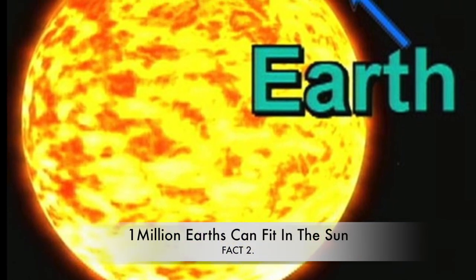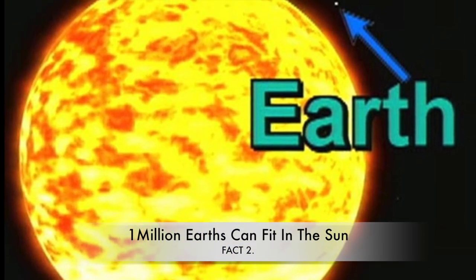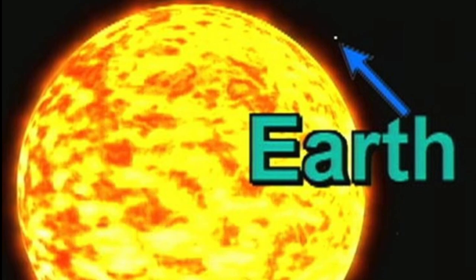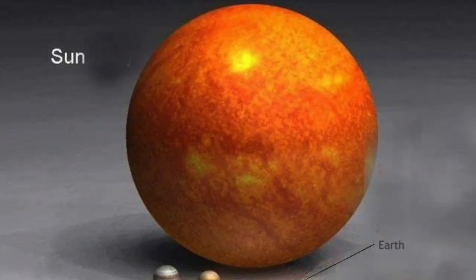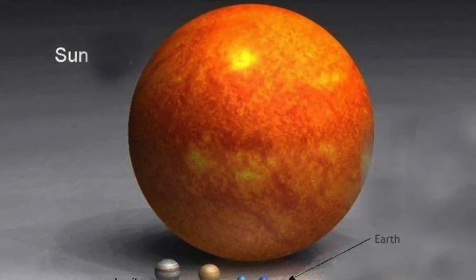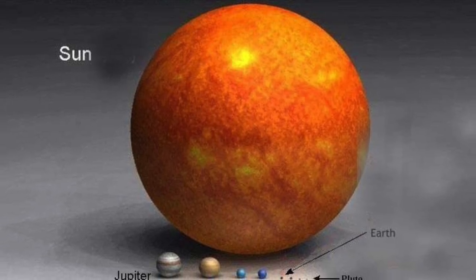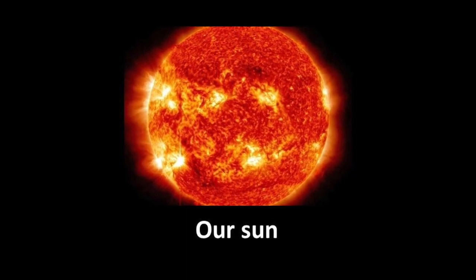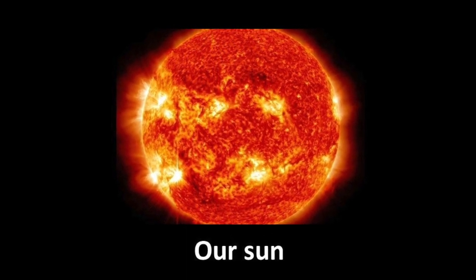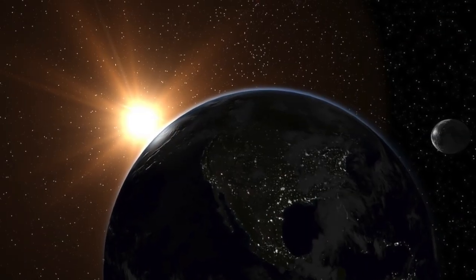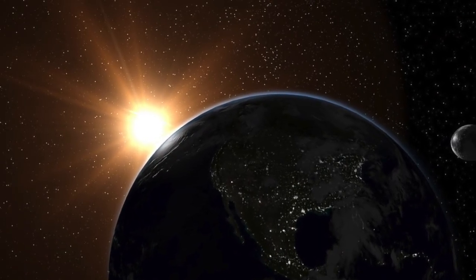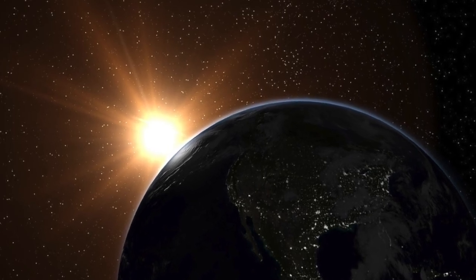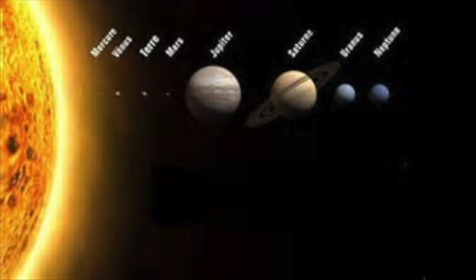Number 2. Over 1 million earths could fit in the sun. The sun makes up 99.86% of the mass of the solar system. If you'd like to do the calculation yourself, here are your numbers. The volume of the sun is 1.412 times 10 to the 18th power cubic meters. And the volume of the earth is 1.083 times 10 to the 12th power cubic meters. So if you divide the volume of the sun by the volume of the earth, you get 1,300,000.